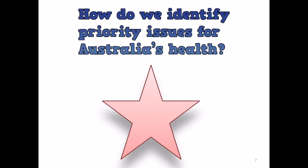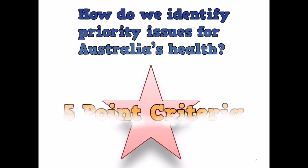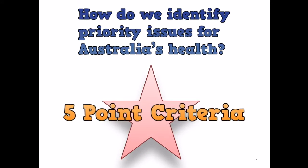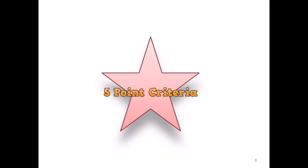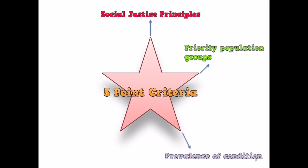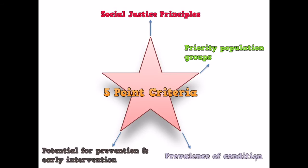Determining priorities and health spending is very challenging. Different people in the community take different perspectives, but the Australian Government has determined that along with epidemiology, the following considerations are important and can be used as criteria. The Government will consider social justice principles, priority population groups, prevalence of condition, potential for prevention and early intervention, and costs to the individual and the community.